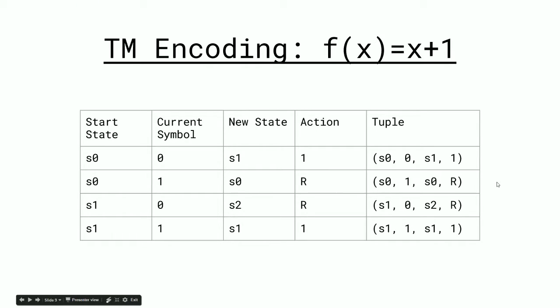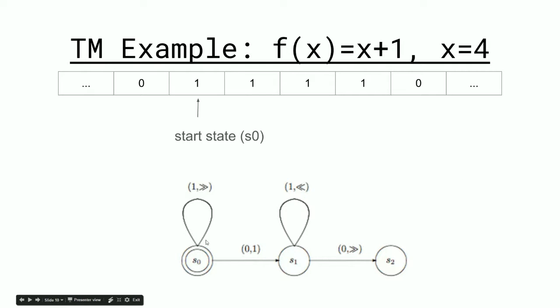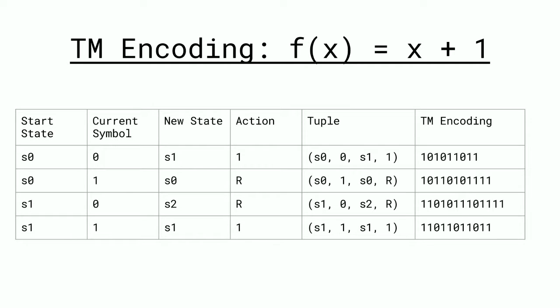Another interesting thing Alan Turing discovered is that you can encode each Turing machine so that each has its own unique number. You do that by rewriting the variables in a table, then representing each of the four variables in a four-tuple. We can encode these tuples in binary using an interesting technique: we have a block of four 1s, each separated by a 0, where each block of 1s represents one of the four states.